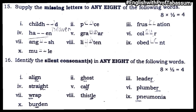Bit number sixteen: identify the silent consonants in any eight of the following words. Align — G is silent. Ghost — H is silent. Leader — R is silent. Straight — GH is silent. Calf — L is silent. Plumber — R is silent. Wrap — W is silent. Thistle — T is silent. Pneumonia — P is silent. Burden — R is silent.